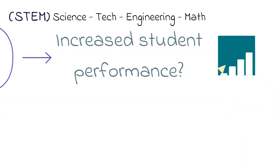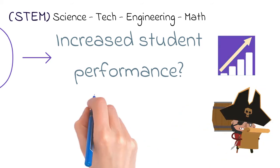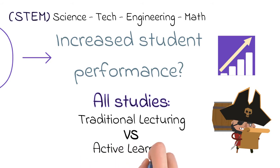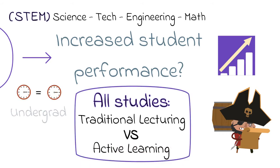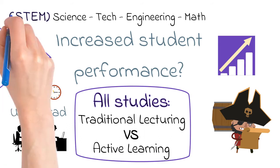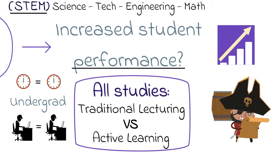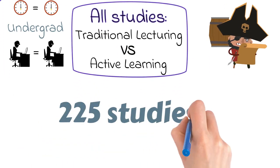To test if active learning really has an effect on student performance, the authors systematically searched for every study that compared traditional lecturing to active learning, without changing time spent in class, for regular undergraduate courses, but changes only to in-class sessions, in STEM disciplines, and which assess student performance. This ended up being 225 studies.